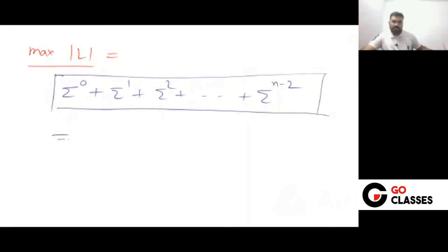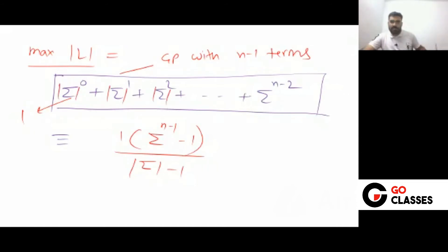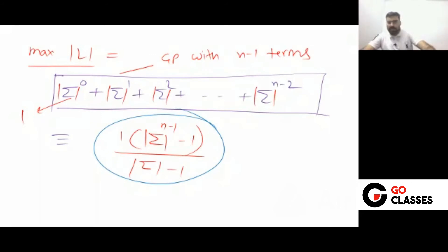This is a GP with (n-1) terms and first term value 1. So the answer will be: first term times (common ratio^(number of terms) - 1) divided by (common ratio - 1). The cardinality of sigma is your common ratio. This is the formula we have derived.